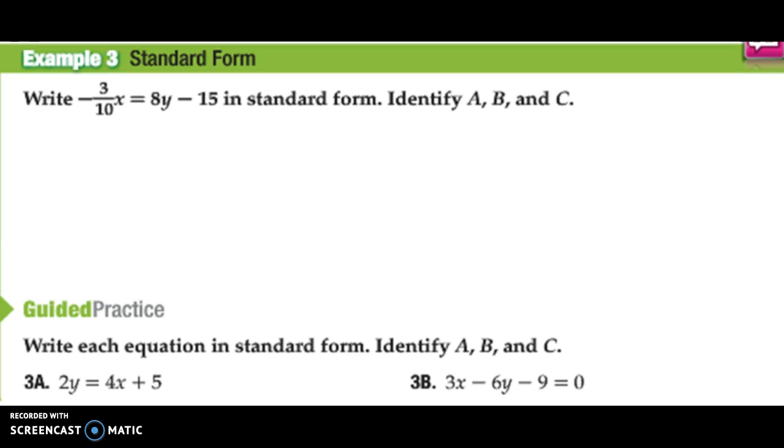Write negative 3 tenths x equals 8y minus 15 in standard form, and then tell me what A, B, C are. If I want to write this in standard form, I've got to get x and y on the same side. So I move 8y to the other side by subtracting 8y from both sides. Now I have negative 3 tenths x minus 8y equals negative 15.